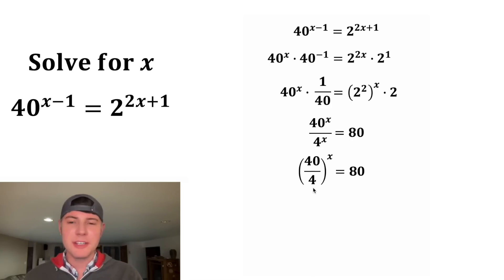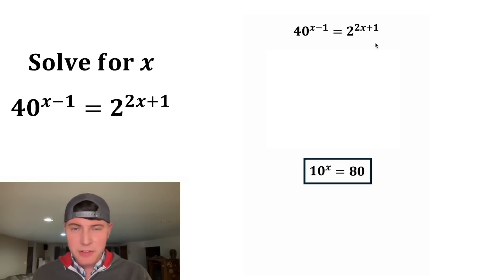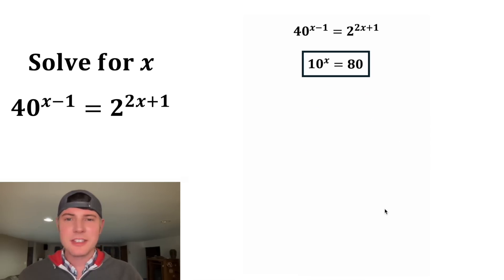Inside of the parentheses, 40 over 4 is equal to 10. And now we have 10 to the x is equal to 80. This looks important. Let's put a box around it. So we've taken this thing that we were given and simplified it into this. Let's see what we can do from here.